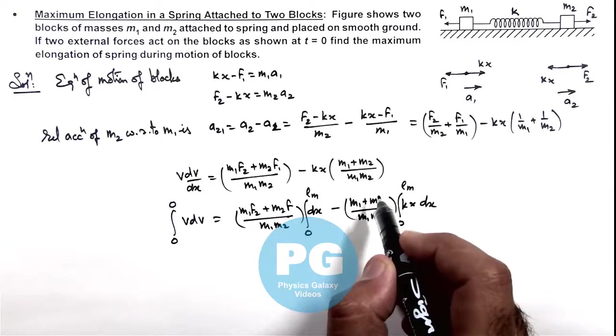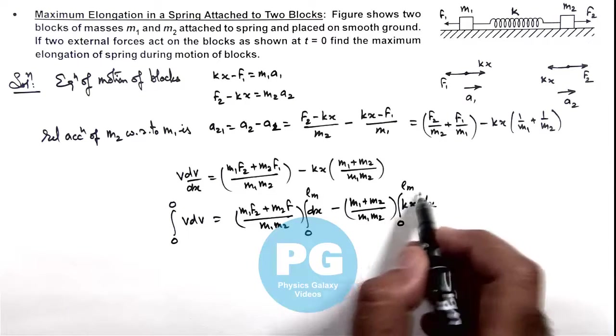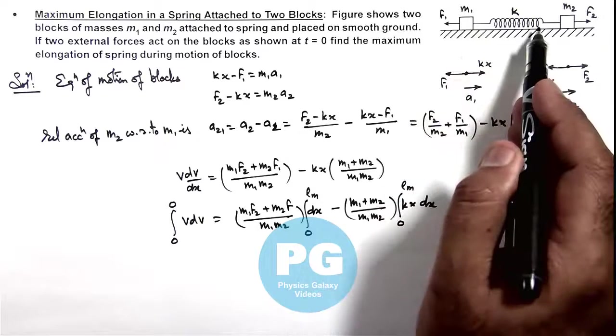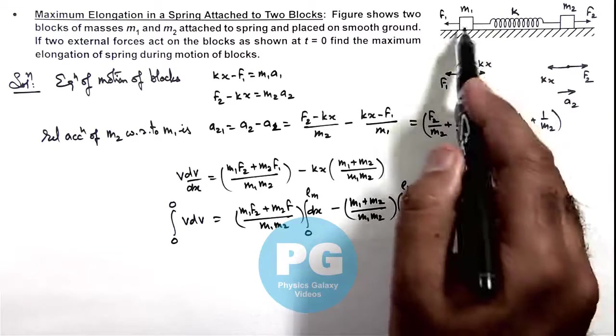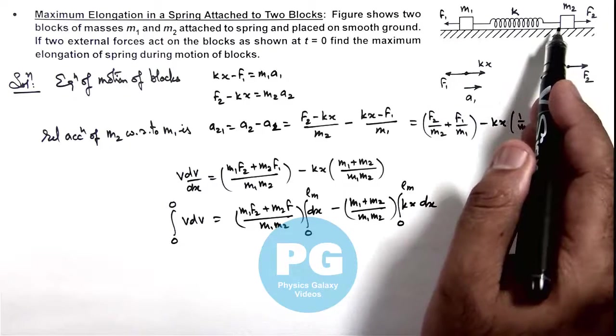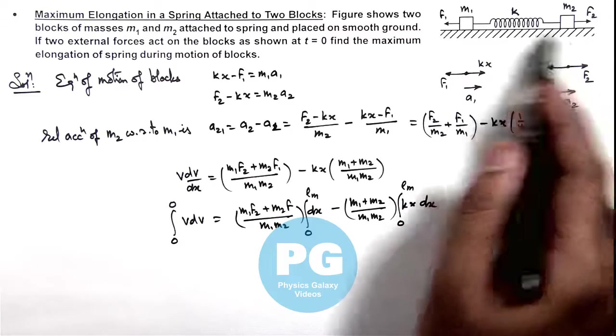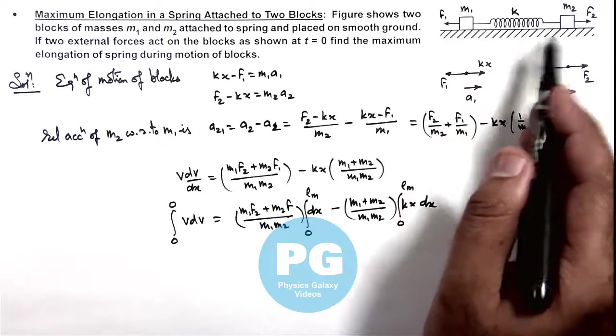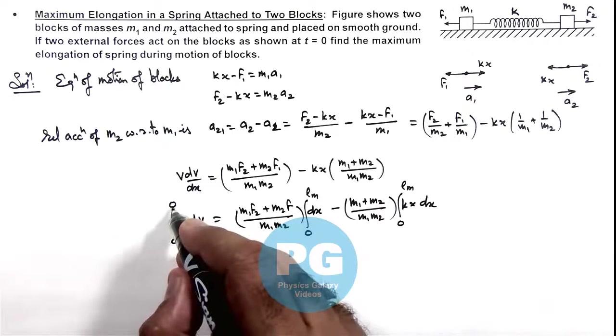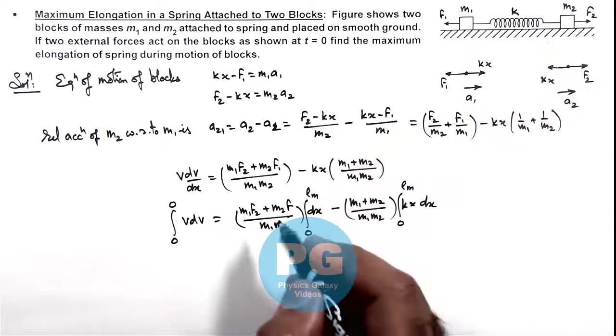Then we can see if lₘ is the maximum elongation of the spring and it is at its maximum length, m₂ and m₁ would be moving at equal speeds because after maximum elongation the spring starts getting compressed. So in this situation if maximum elongation is lₘ again the relative speed of m₂ with respect to m₁ would be zero.